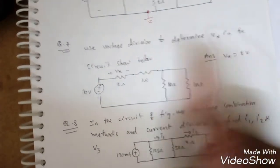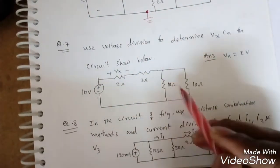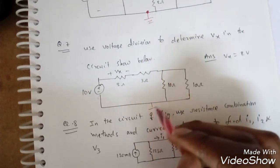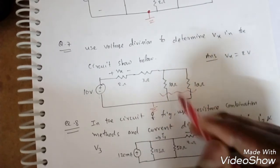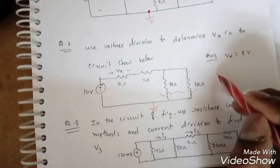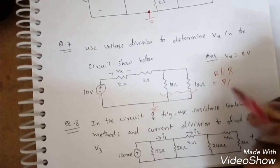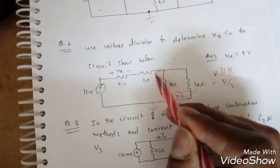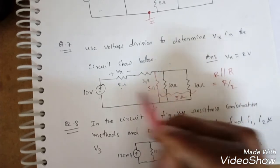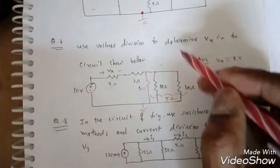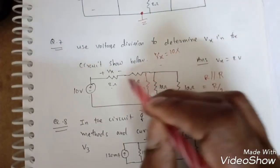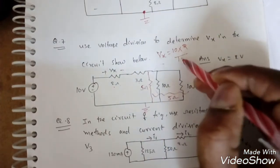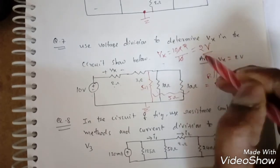The next problem asks us to use voltage division to determine Vx. By looking at the circuit, these two parallel resistances — both 10 ohms — give an equivalent of R/2 = 5 ohms. So we have 2 ohms, 3 ohms, and 5 ohms in series. By the voltage division rule: Vx = 10 × 5 / (2 + 3 + 5) = 10 × 5 / 10 = 2 volts.